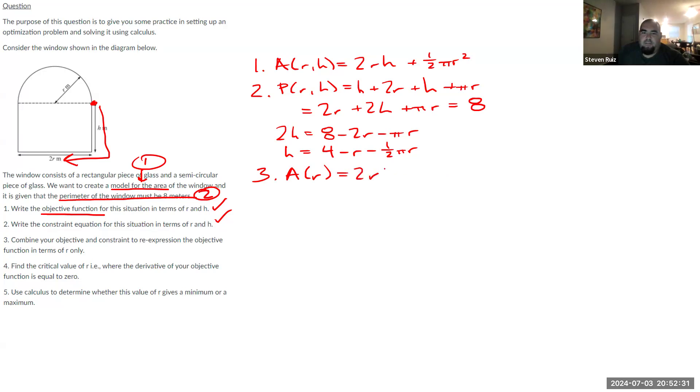I can basically plug that back into my area function, and that'll give me area in terms of radius only. So A(R) = 2R times my new H, which is 4 - R - ½πR, plus ½πR². I'll clean this up a little bit. Right now we have the objective function in terms of the single variable, which is something we can use calculus to do some more analysis on. But before I get there, I want to take a derivative of this. I would rather simplify this as much as I can. So I have 8R - 2R² - πR² + ½πR². I can combine my πR² terms, so I get 8R - 2R² - ½πR². So this is my new area function in terms of radius only.